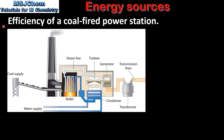Next we look at the efficiency of a coal-fired power station. In a coal-fired power station, coal is burned to produce heat. The heat released boils water to produce steam. The steam turns a turbine, which turns a generator, which generates electricity.